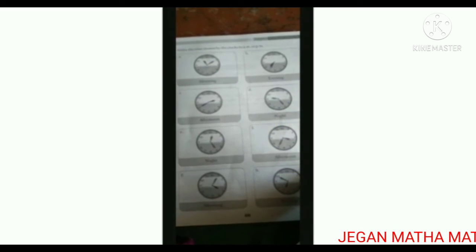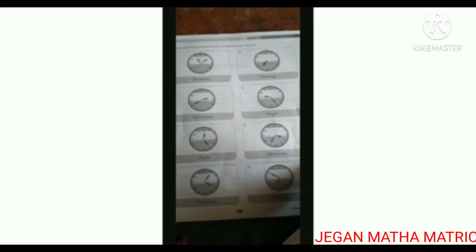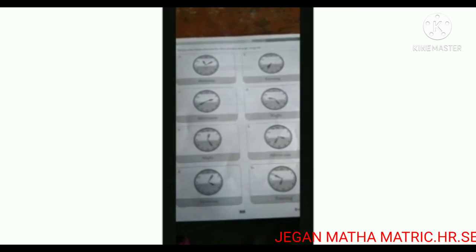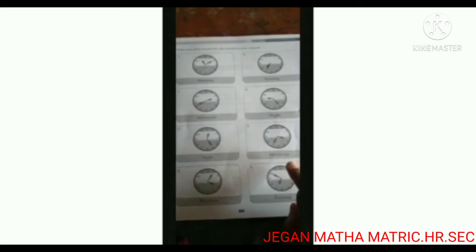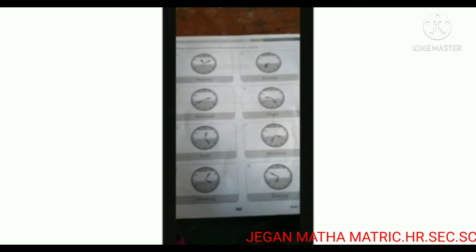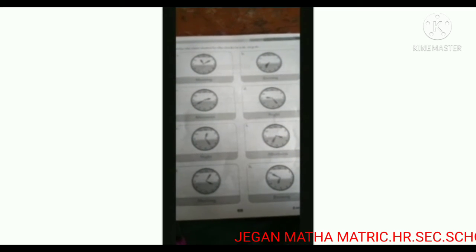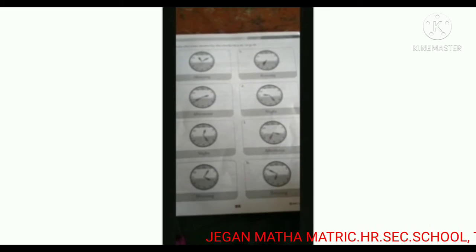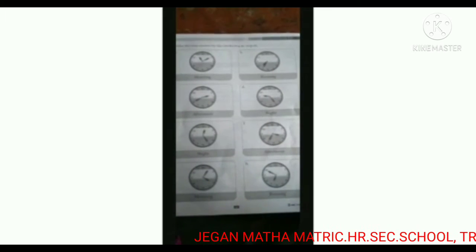Next exercise: write the time shown by the clock in A.M. or P.M. You know that very well. Midnight to twelve o'clock afternoon we say A.M. And afternoon twelve o'clock to next day night twelve o'clock we say P.M. Clear.